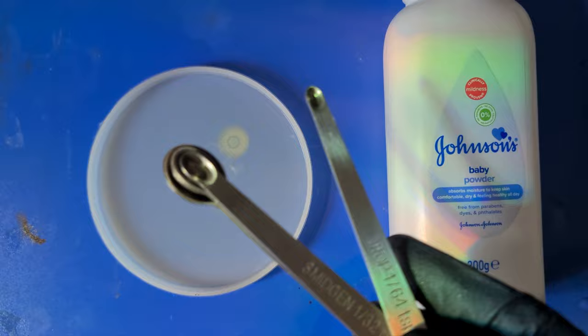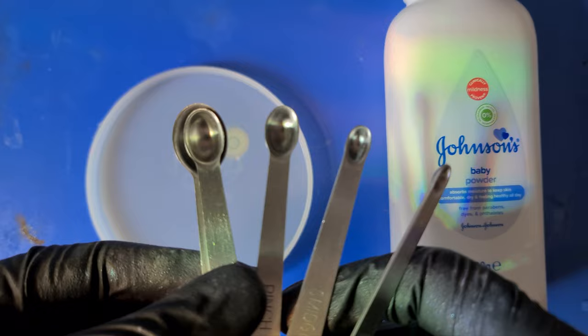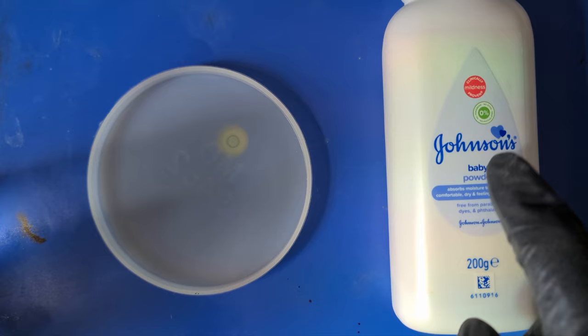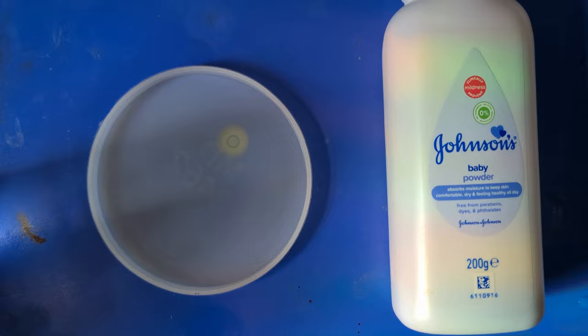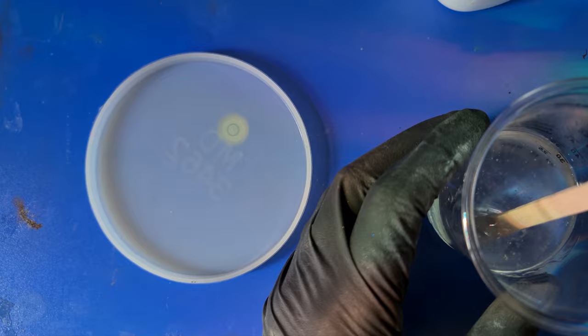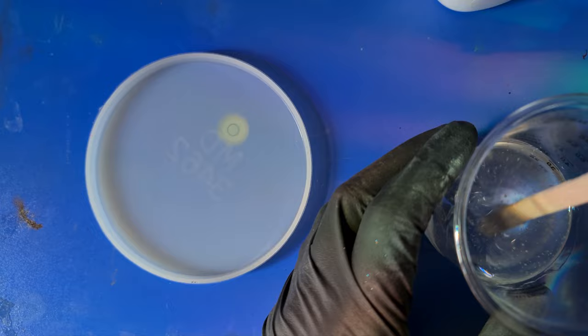We're using the lab resin for this one. As always, all the links for everything I'm using are in the description box below. I'm going to use some alcohol inks as well just to give it some color. Right, let's get mixing. Well, this feels weird. I've been so used to playing with UV resin recently that I haven't stirred any normal resin for quite some time.